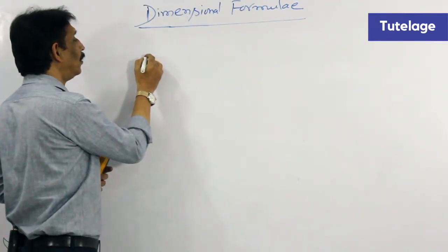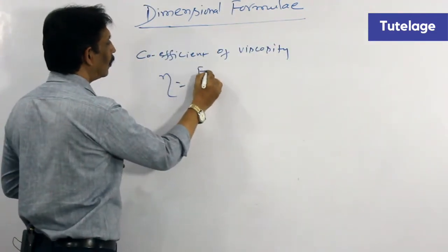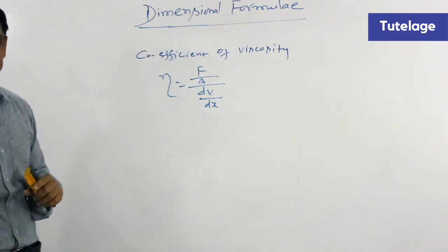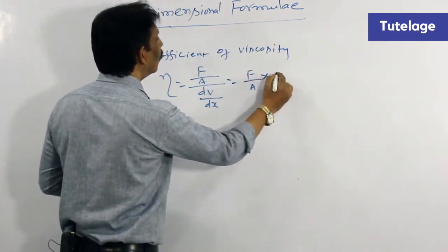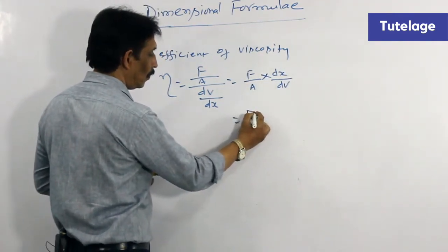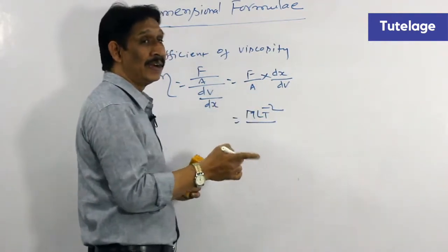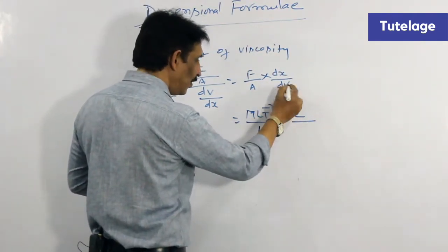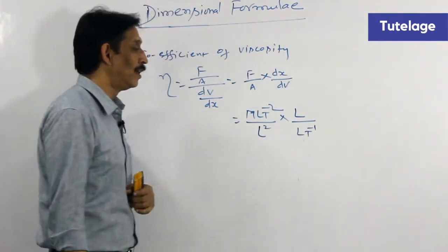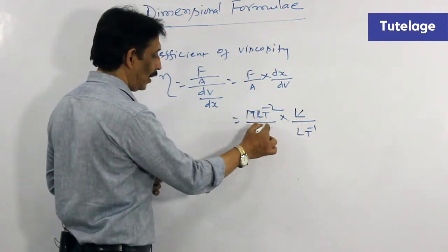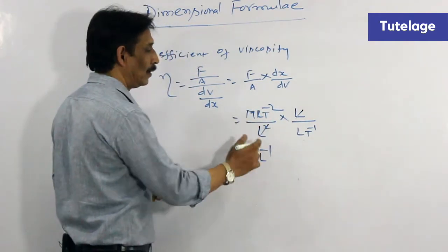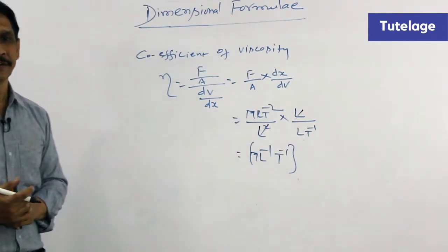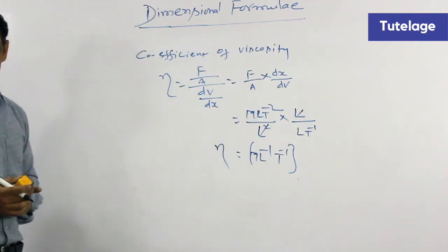For the coefficient of viscosity, eta equals F divided by A times dV by dX, where F is force, A is area, and dV by dX is the velocity gradient. This can be written as F by A into dX by dV. Force is M L T minus 2, area is L square, distance between layers is L, and change in velocity is L T minus 1. Working through the substitution gives M L minus 1 T minus 1, which is the dimensional formula for coefficient of viscosity.